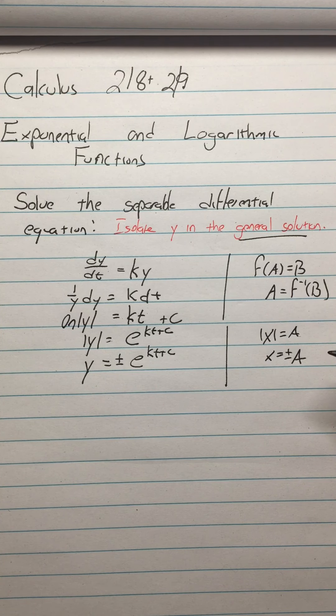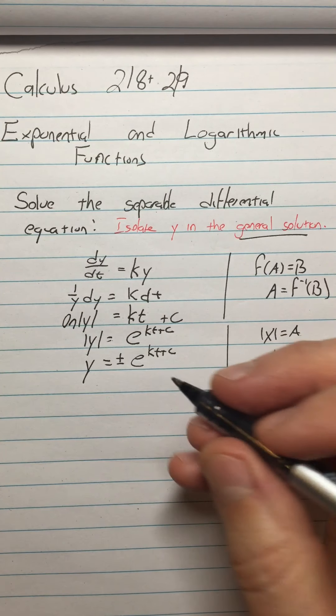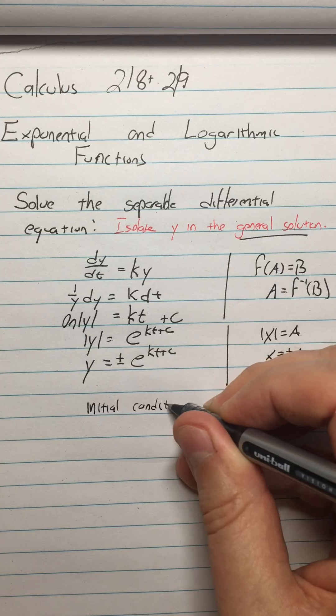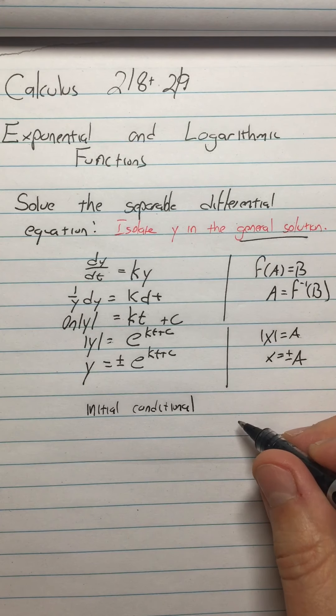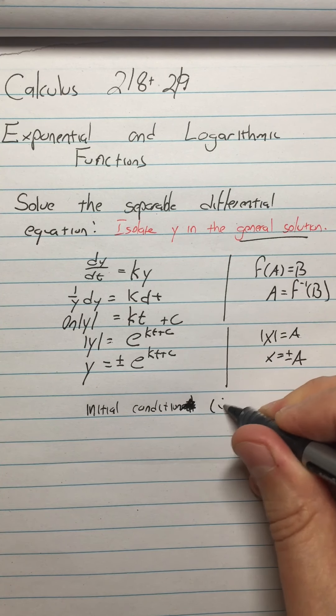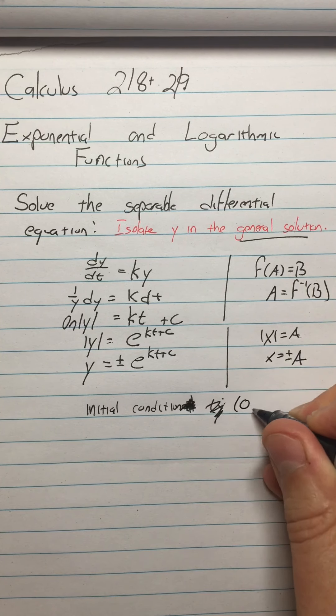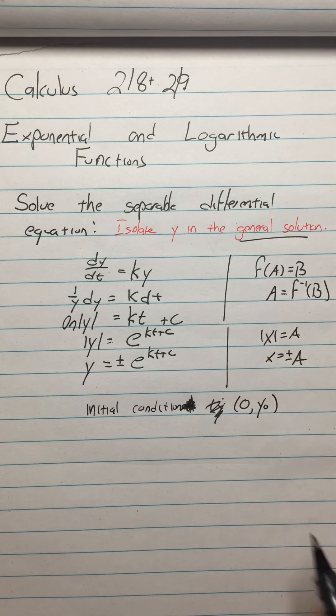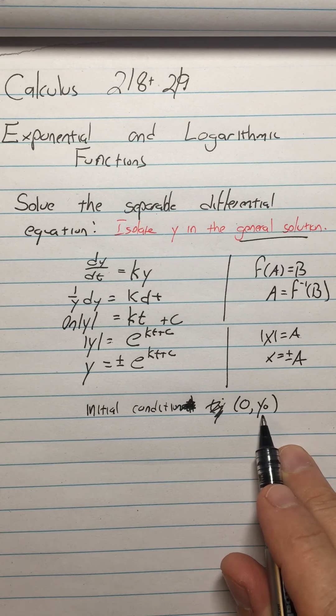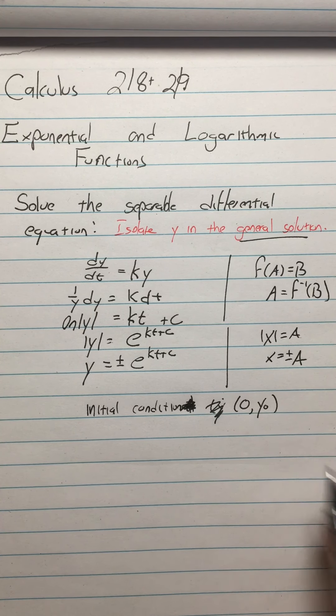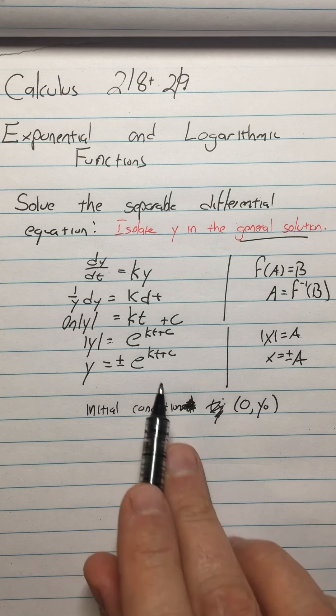Now, suppose you had, in addition to this, an initial condition. And I'm going to properly, it's going to be properly an initial condition now. Initial condition means that I'm using time. So initial condition means time equals zero, T equals zero. So my initial condition, I'm going to call that point. Let's say we have an arbitrary initial condition. We just call it Y zero. So whatever the value of Y is when T is equal to zero. Then we could use that to solve for what the C is here.